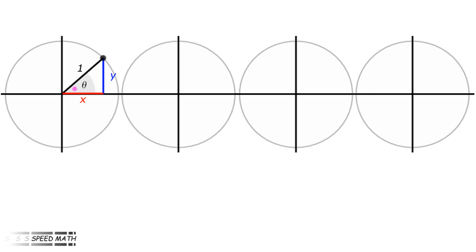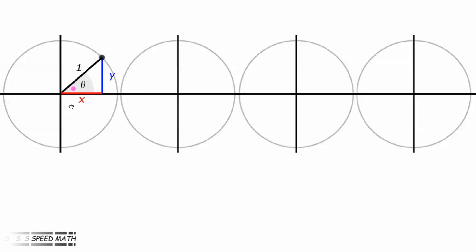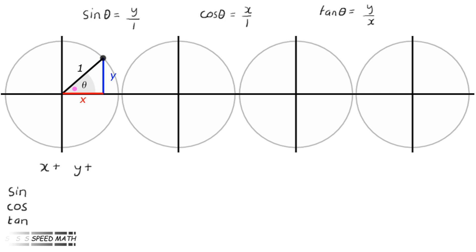Looking in the first quadrant at the triangle made by the radius, sin theta equals y over 1, cosine theta equals x over 1, and tan theta equals y over x. Since in quadrant 1 both x and y are positive, sin theta, cosine theta and tan theta are all positive.